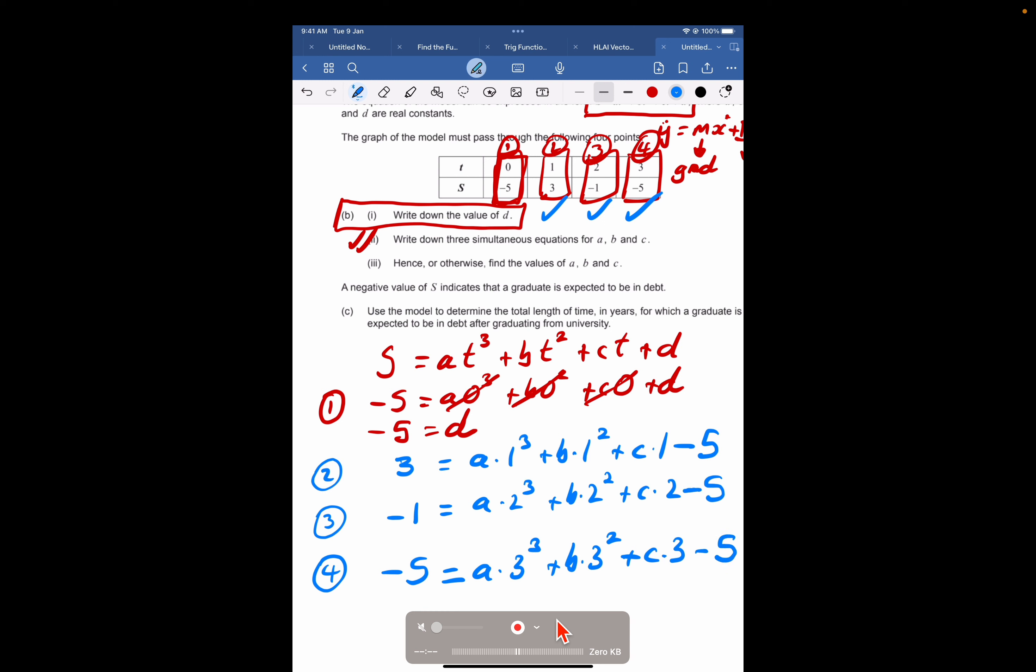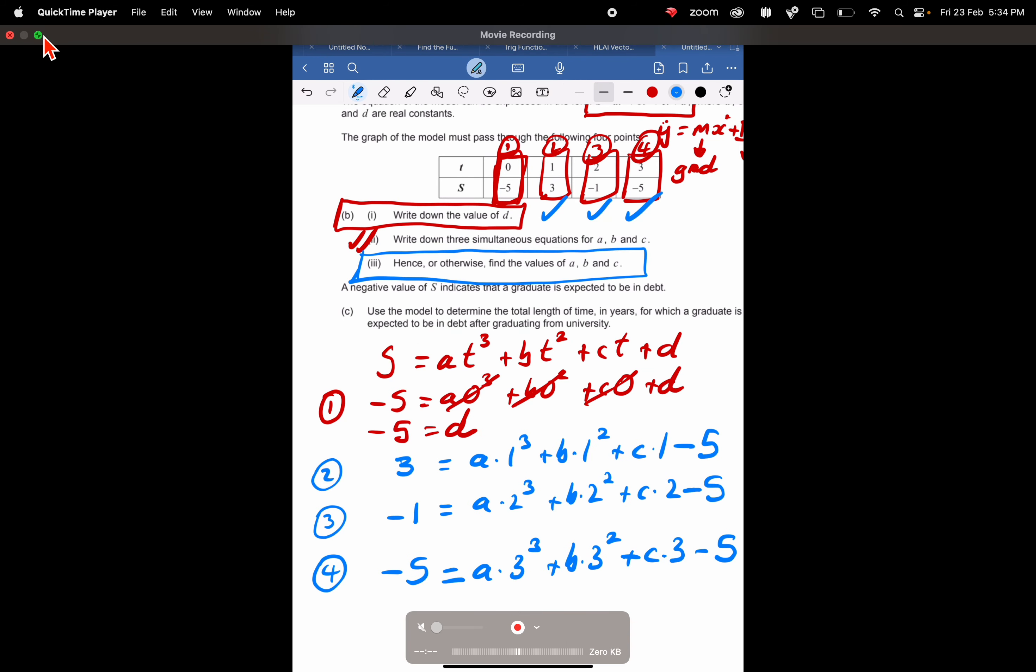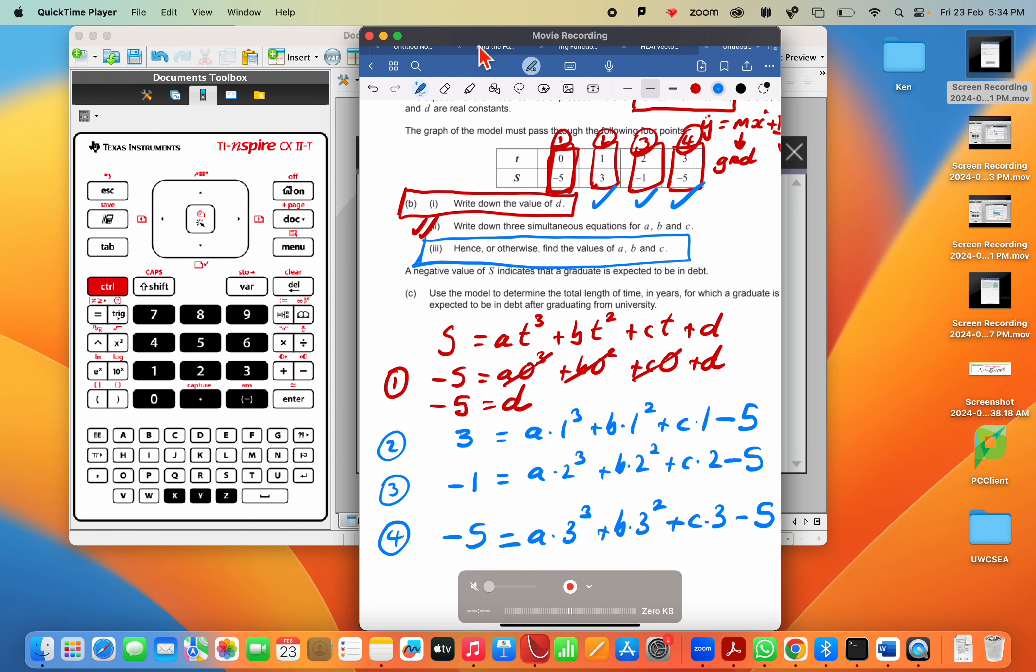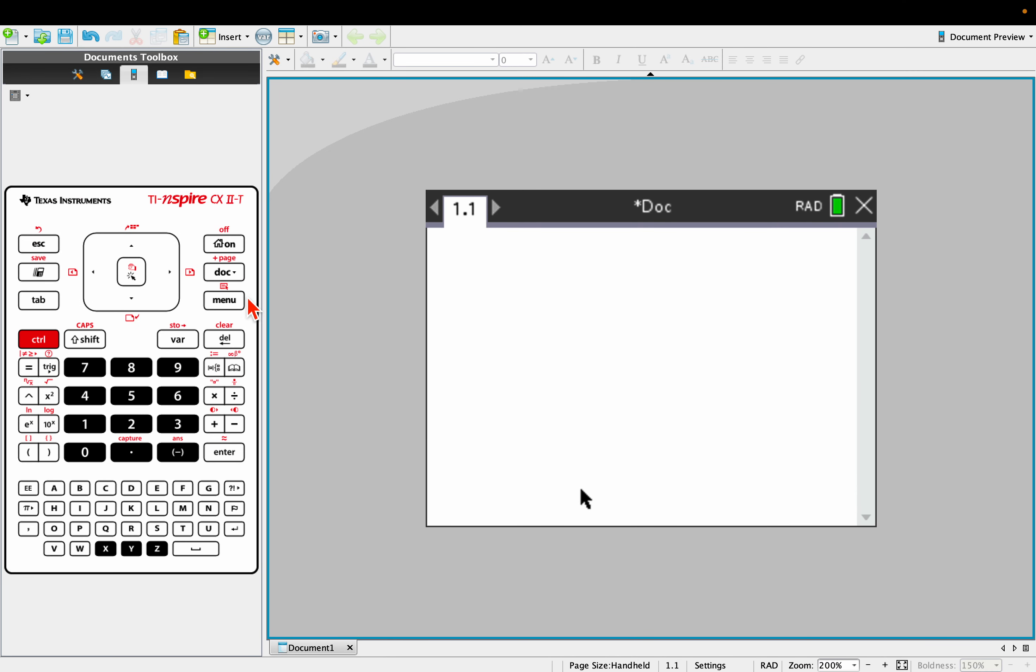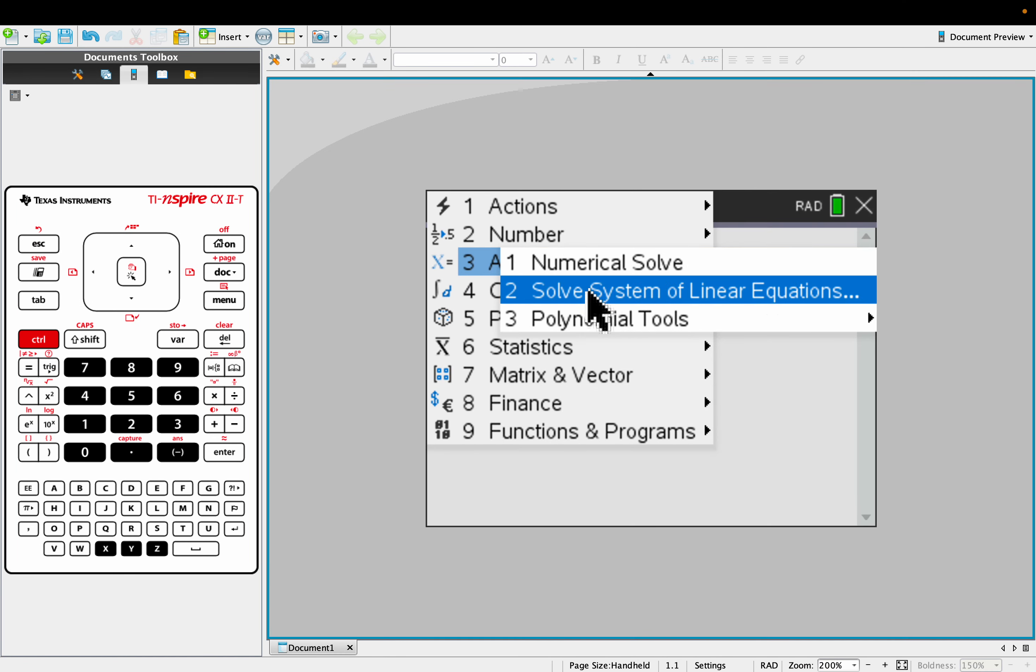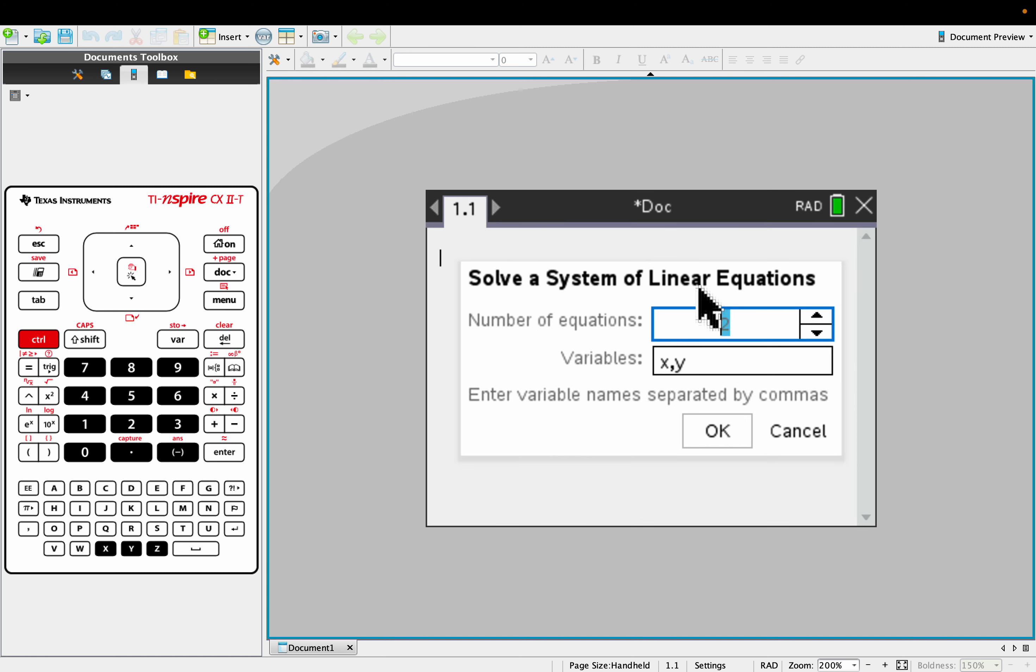Now we've got hence or otherwise. We've got simultaneous equations, three equations with three unknowns, so we immediately switch to our calculator. It's not n-solve. n-solve is just for one equation. Let's go to menu, algebra, solve system of linear equations. Linear equations, A's, B's, and C's. There are three equations. And you might as well just change this to A, B, and C, because then it matches exactly the equations we've got.